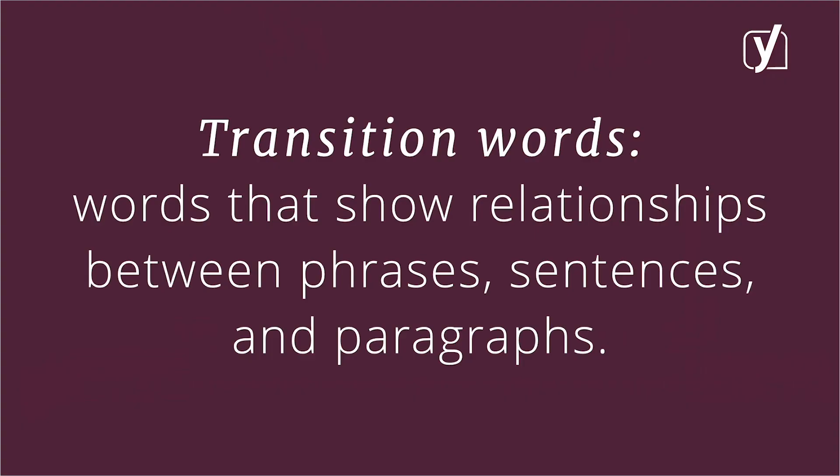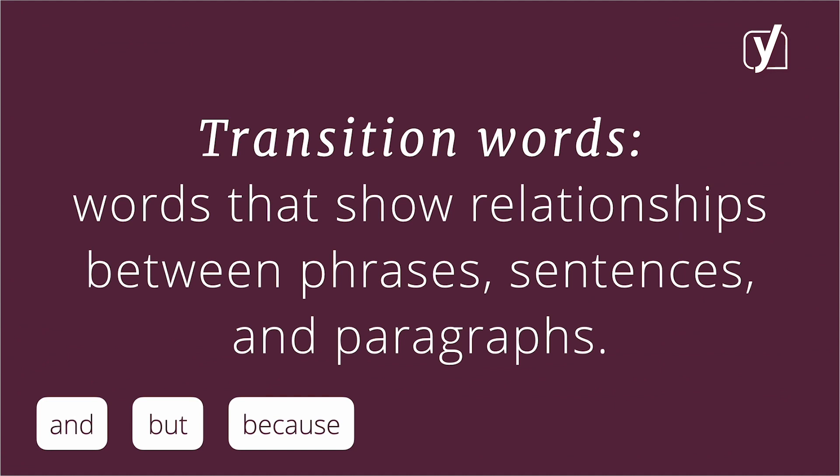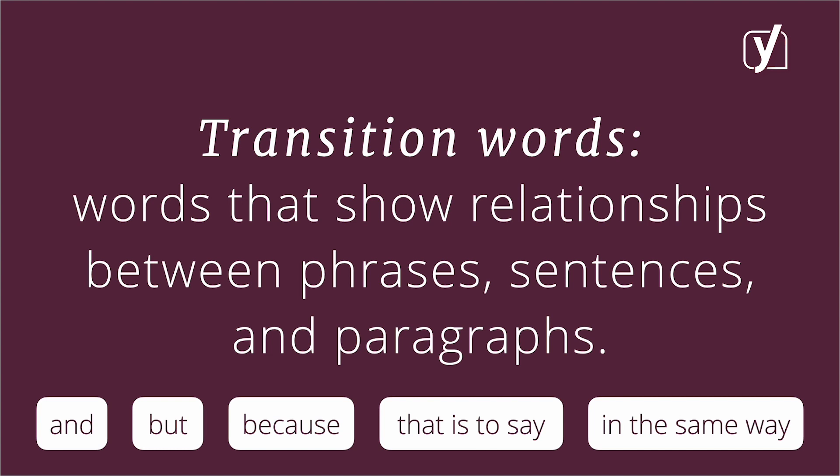Transition words are words that show relationships between phrases, sentences, and paragraphs. For example, 'and,' 'but,' and 'because' are transition words. Phrases like 'that is to say' or 'in the same way' are also used to indicate transitions between sentences and ideas. You probably use words and phrases like these every day — they're not incredibly hard or unusual. Still, if you use them properly in your writing, they will make it easier for your readers to understand how your thoughts and ideas are connected.